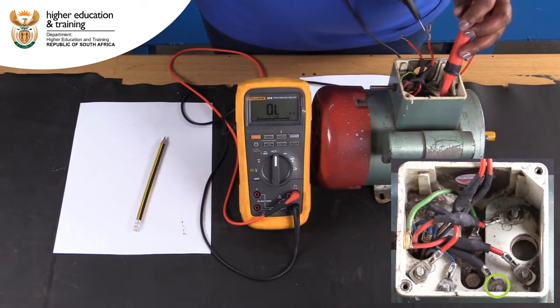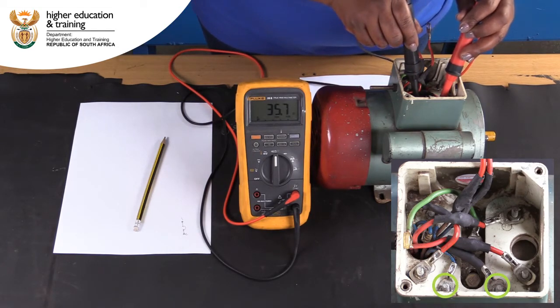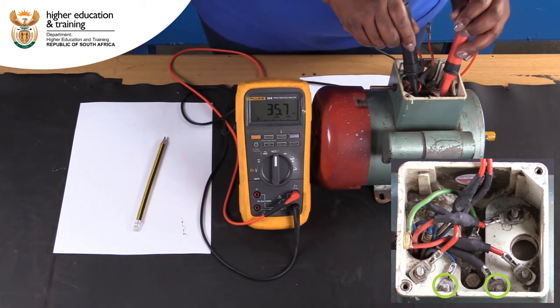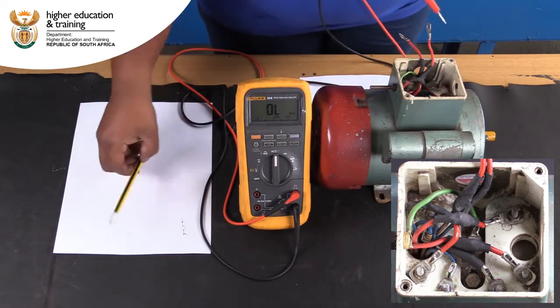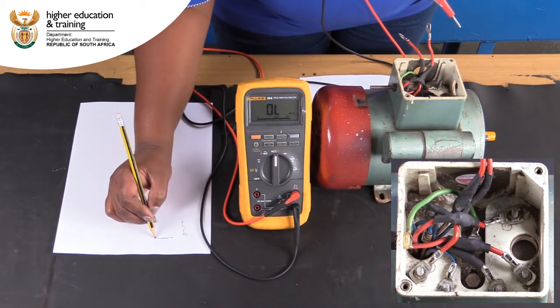Between posts 3 and 4, we get a reading of 35.7 ohms. This is quite a large reading, so probably indicates the start winding. Make a note of this result on your own terminal block diagram.